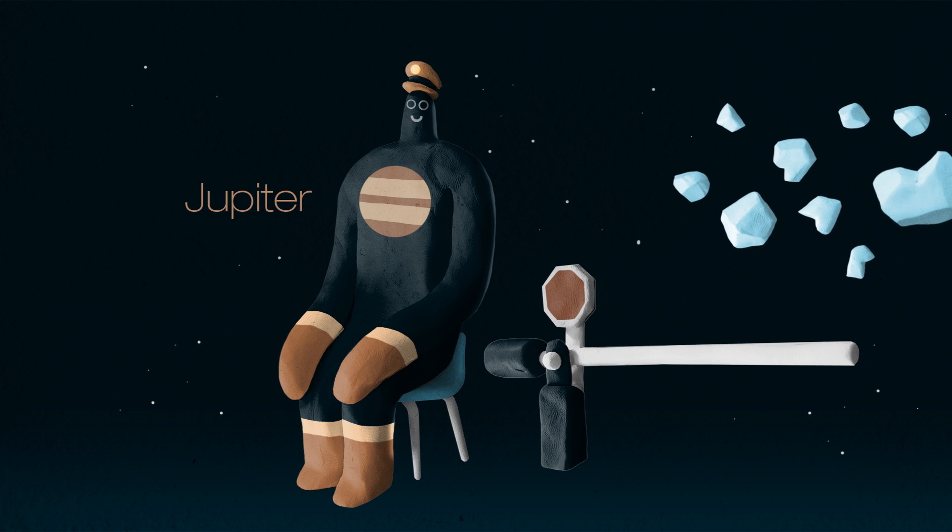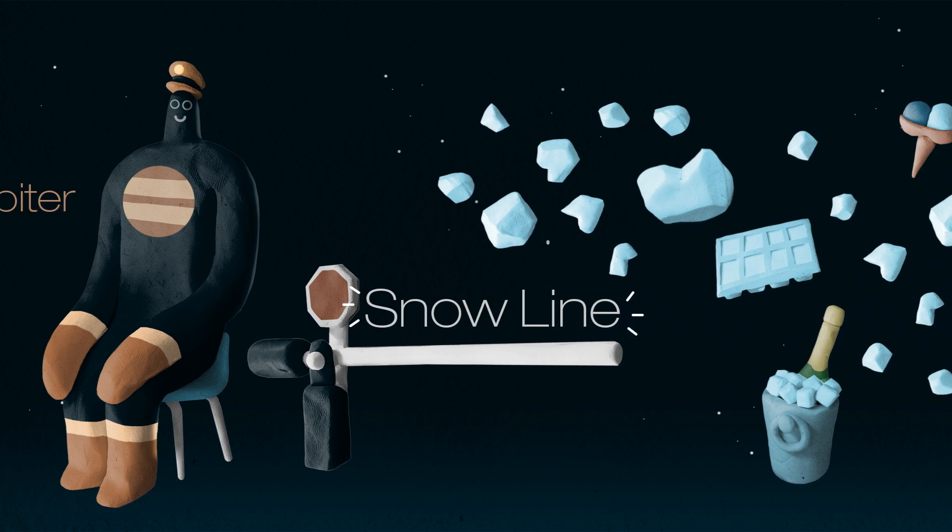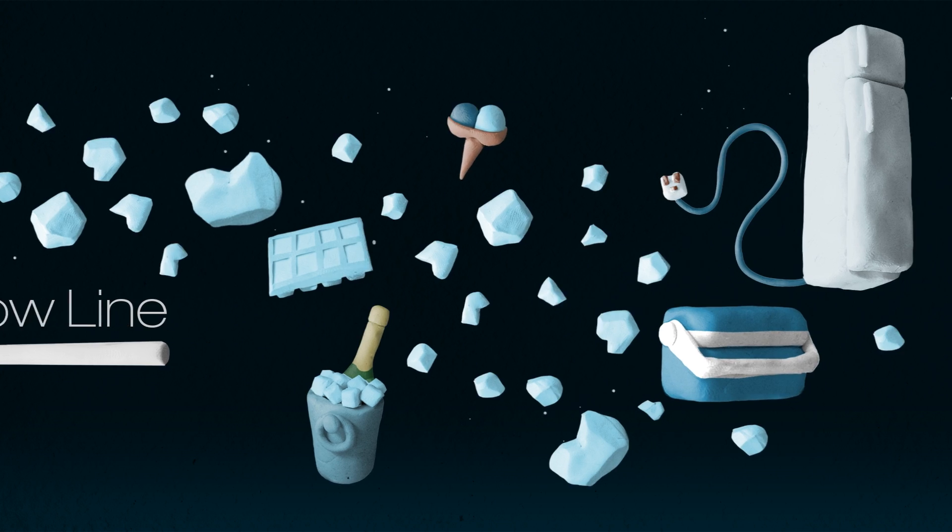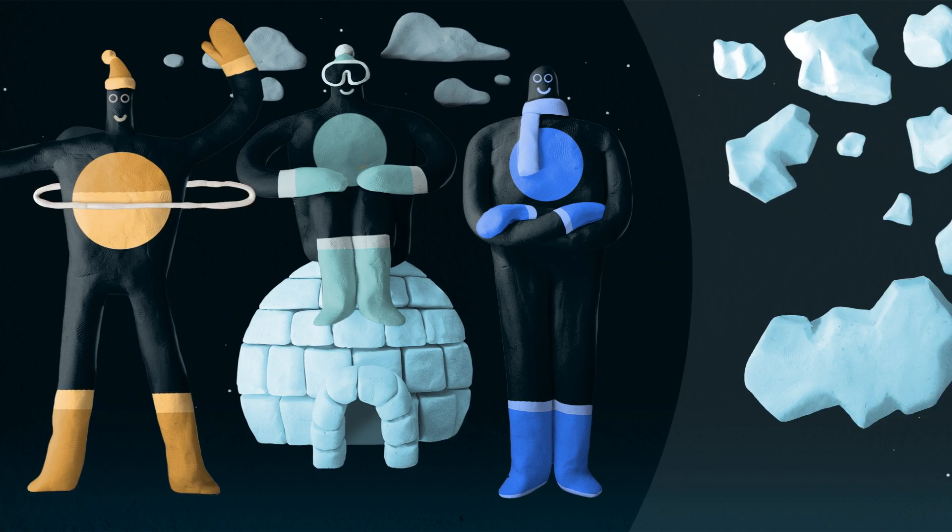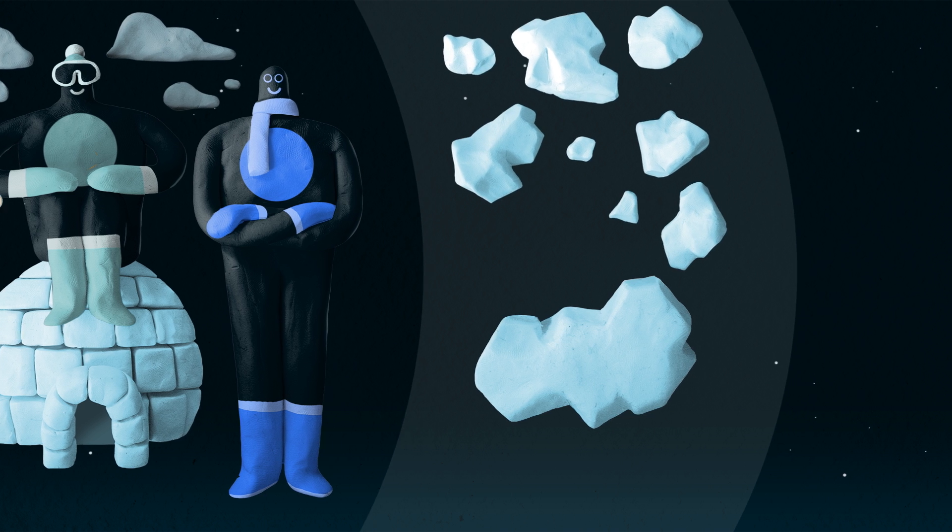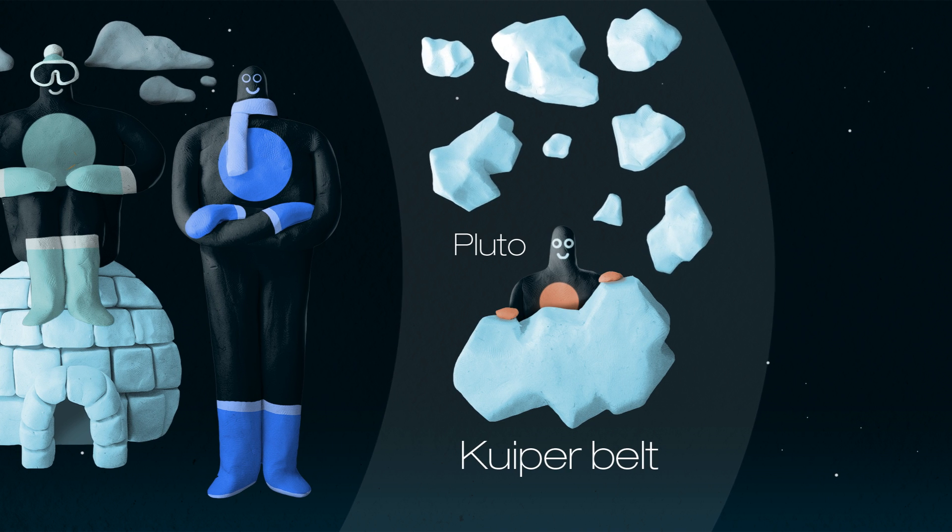The gas giant Jupiter marks a boundary in the solar system called the Snowline, beyond which objects contain a lot of ice. Past the other three gas giants we find a huge ring of ice chunks, large and small, called the Kuiper Belt, where the dwarf planet Pluto lives.